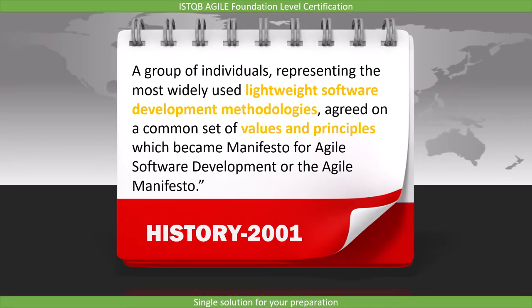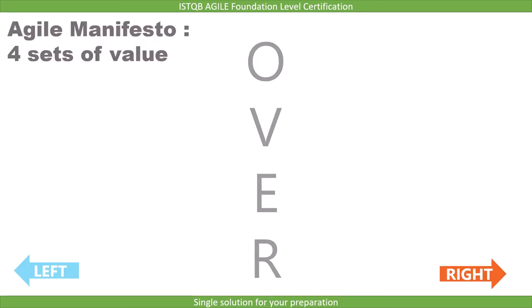Let's first see the history of the agile manifesto. In 2001, a group of individuals representing the most widely used lightweight software development methodologies agreed on a common set of values and principles, which became the Manifesto for Agile Software Development, or the agile manifesto. In simple terms, the agile manifesto contains a set of values and principles.